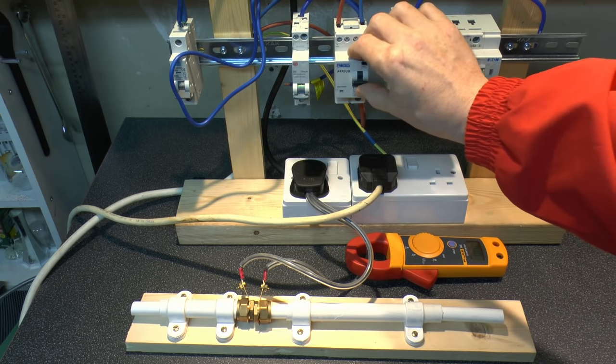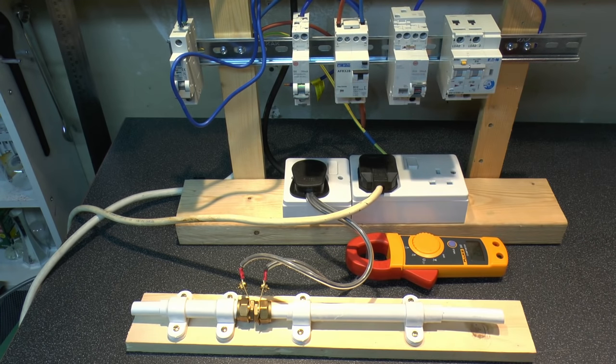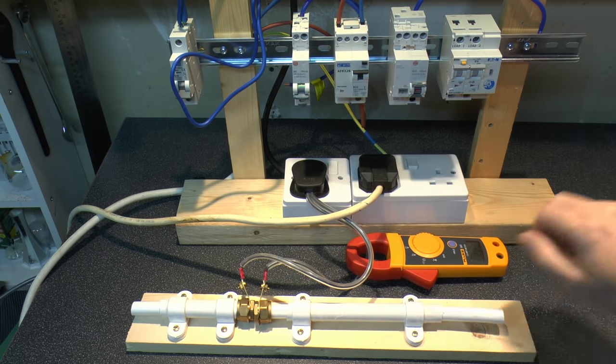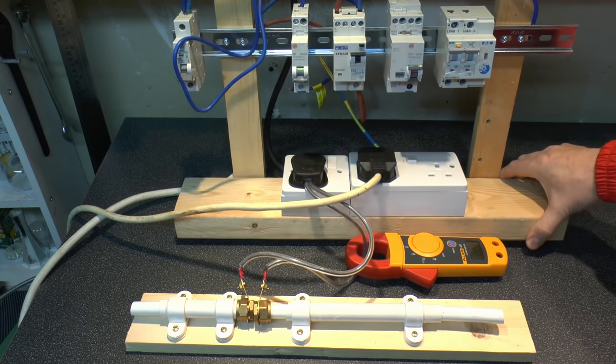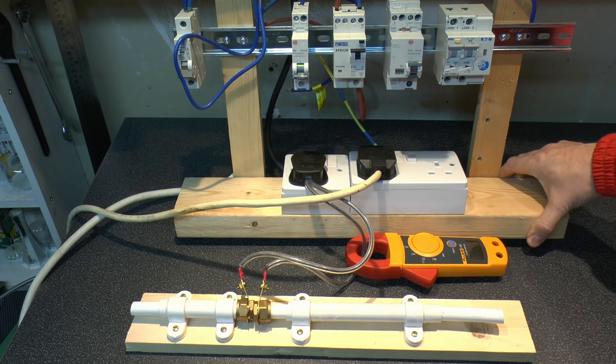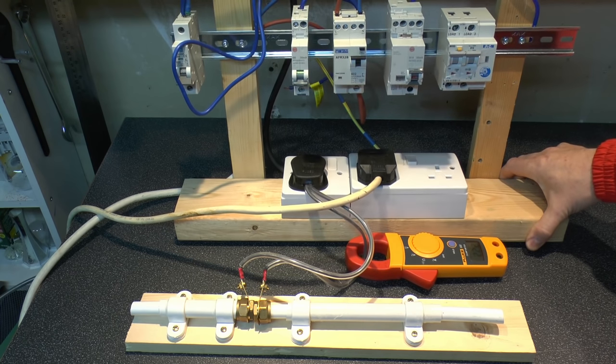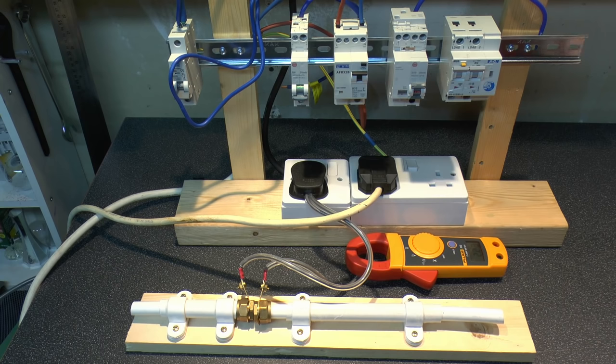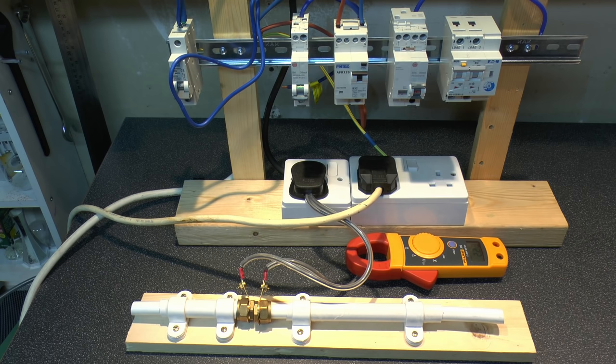Now I've just turned this on again. And what we're getting there is basically one flash fairly quickly there. Might not be entirely obvious on the camera, but it's just one single repeating flash there on the amber. And according to information, one flash is a series arc fault, which again is what we've got. So no surprise there.